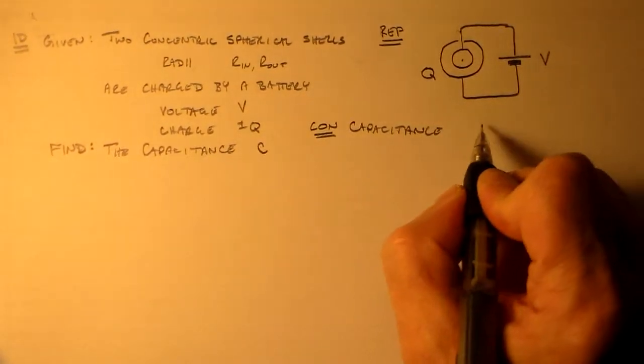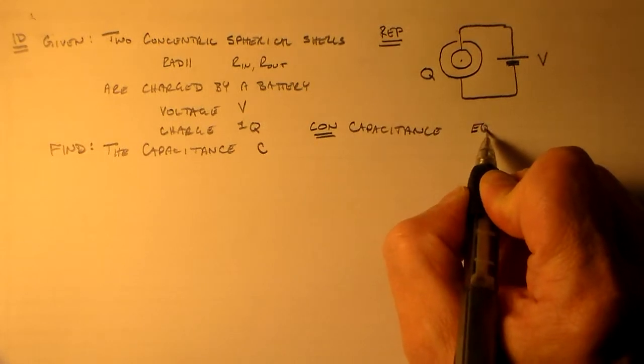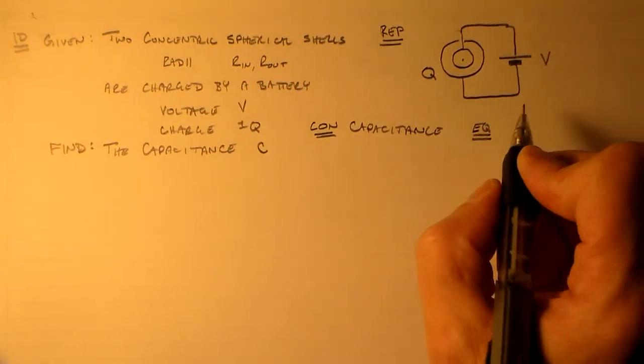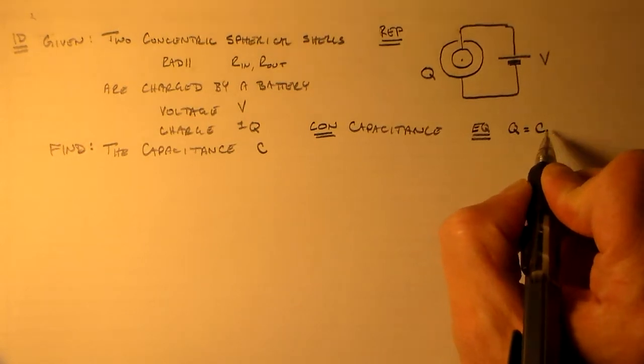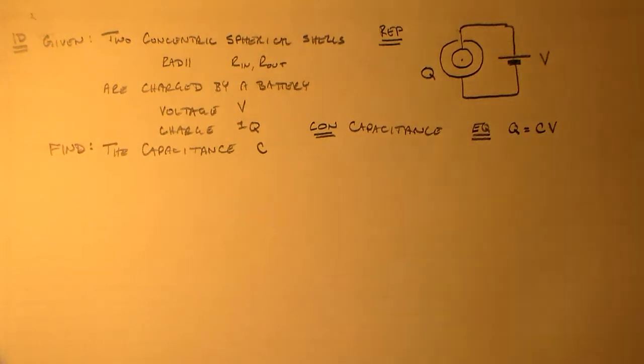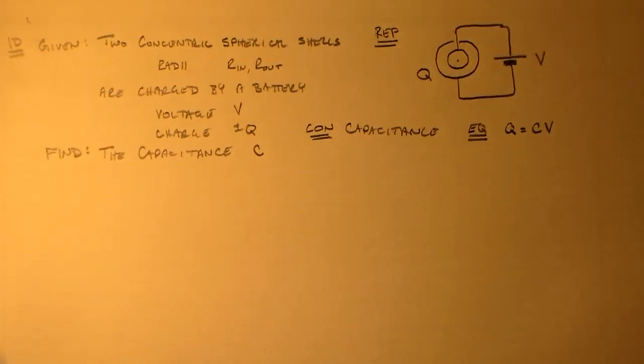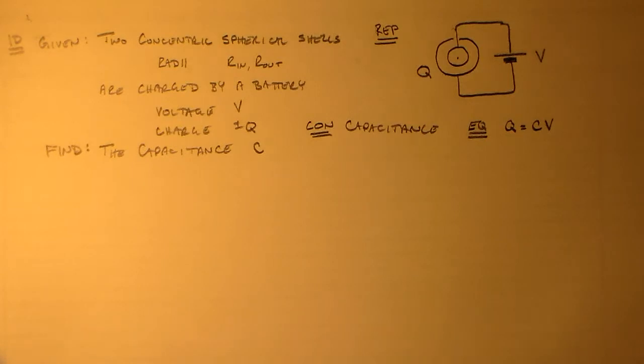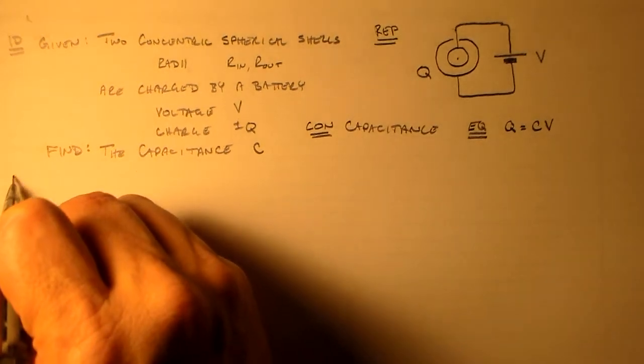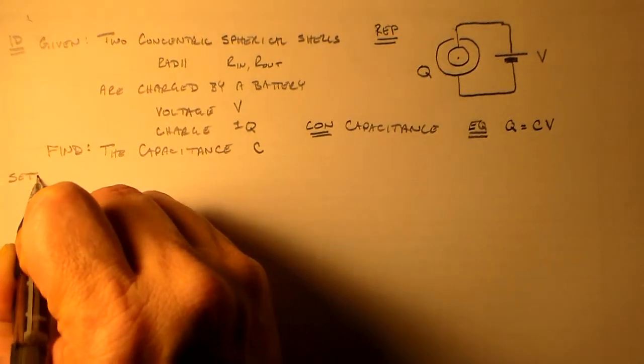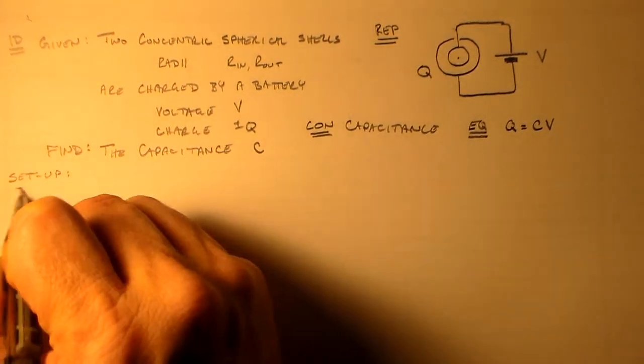And so our concept here is the capacitance. And this is associated with one of the more difficult and scary equations that we use, which is Q is equal to CV, or C delta V, and CV will do fine for now, okay? And basically we do need to worry a little bit about our setup, so I'll just talk a little bit about it.